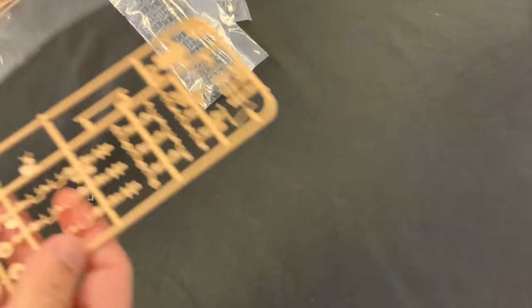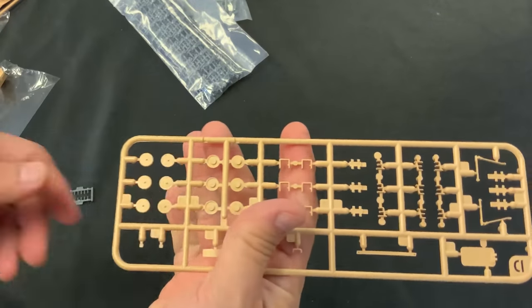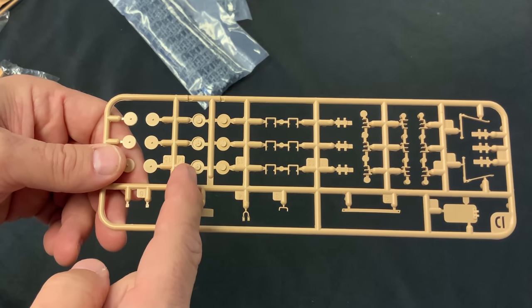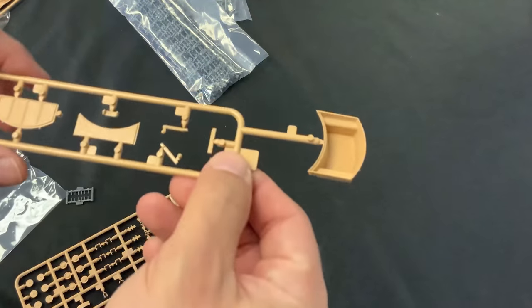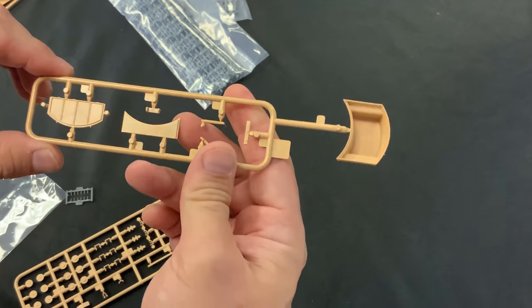And the only other last two little pieces we have, these are those return rollers, another set of the return rollers up here. And we also almost forgot to show you the turret basket, and that comes on its own little sprue here as well.